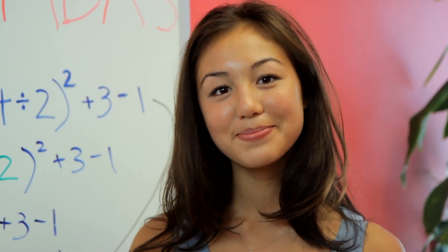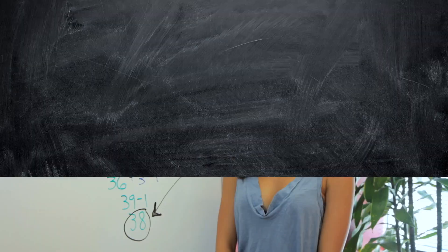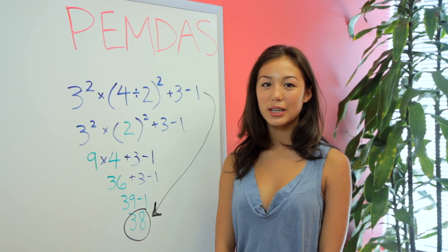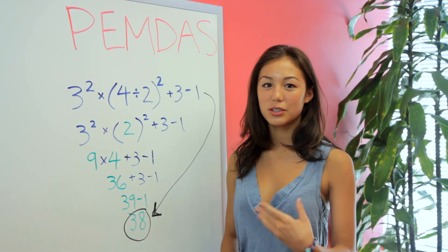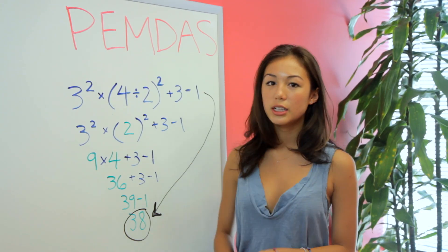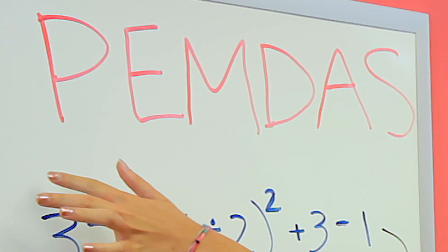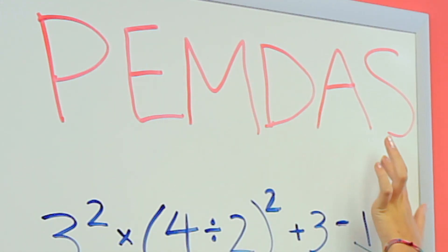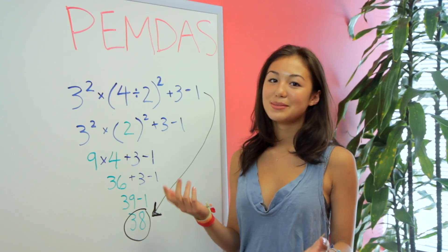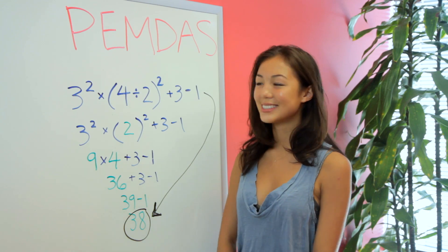Hi, I'm Leela, and today this video will be on order of operations. In solving an equation, there's a certain order that you have to follow in order to solve it correctly. So this is the order of operations, and to remember this, we have PEMDOS. I have no easy way to remember that — it's just PEMDOS.